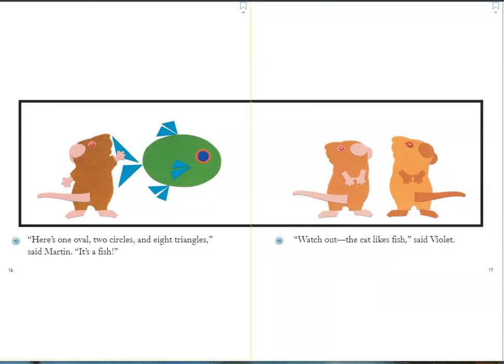"Here's one oval, two circles, and eight triangles," said Martin. "It's a fish."